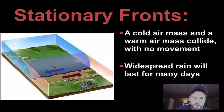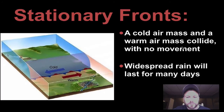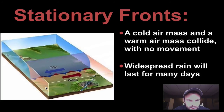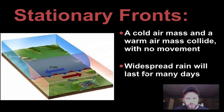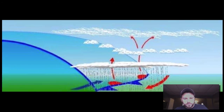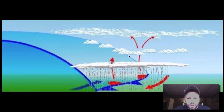Then we have stationary fronts. Stationary fronts are where a cold air mass and a warm air mass collide with no movement — they run alongside each other, come in, and just stay there. Because there's no real movement but we do have some unstable air, we have rain that will last for many days. The diagram shows warm air moving one way, cold air moving the other way, and the air rising to form clouds.